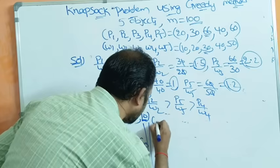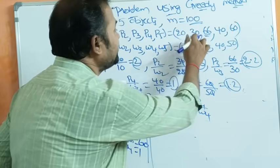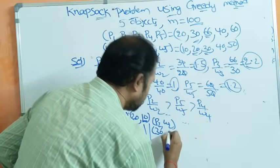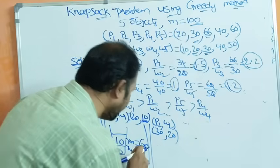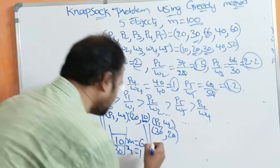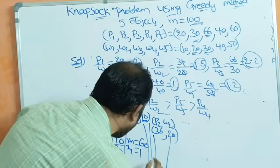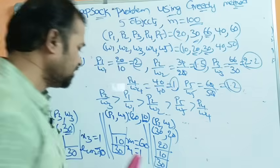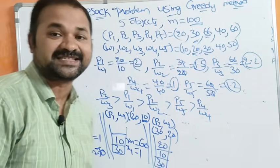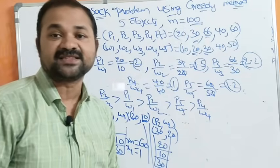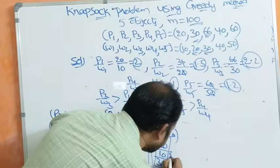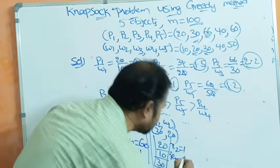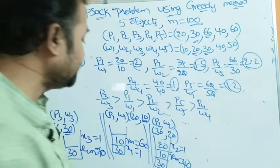Next object is P2/W2. Profit is 30 and weight is 20. The remaining size is 60 kg. The object weighs 20 kg, so it fits fully. Total placed so far: 30 + 10 + 20 = 60 kg. Remaining size is 100 − 60 = 40 kg. So x2 equals 1.